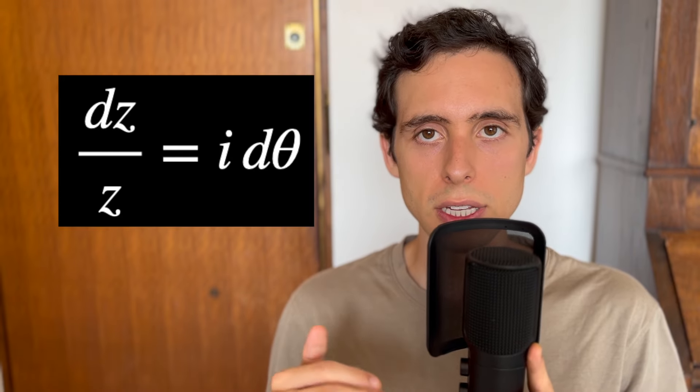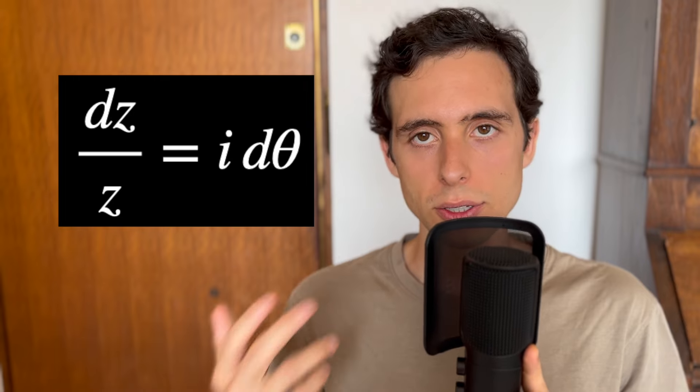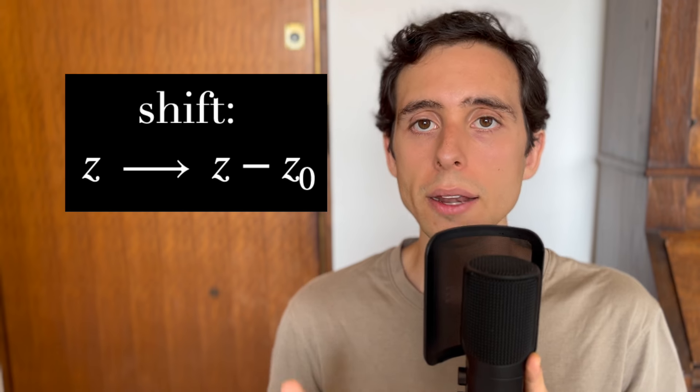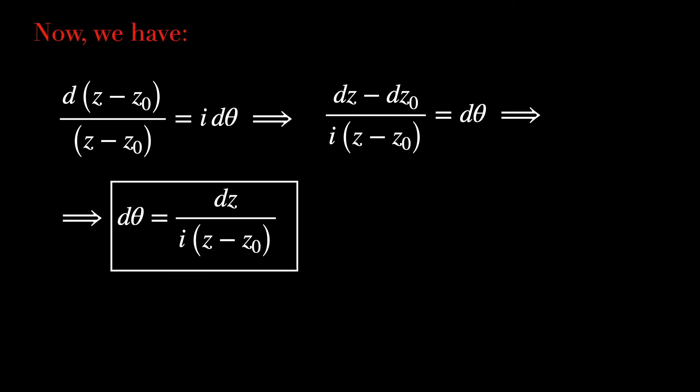dz/z equals idθ. Actually, this equation is valid only when our point of interest is z0 = 0 or the origin. A more general version would require us to shift it. So from z to z - z0. Now, doing this shift, we have that d(z - z0)/(z - z0) = idθ, which will take us in the end to dθ = dz/(i(z - z0)).